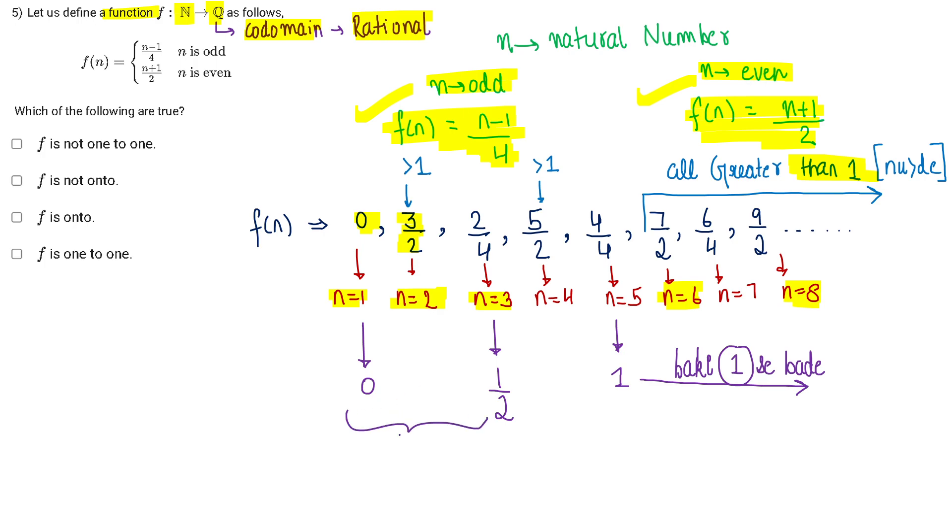Between 0 and half there are so many rational numbers. There are infinite rational numbers. Therefore, my range, that is the function values, is less than the codomain.